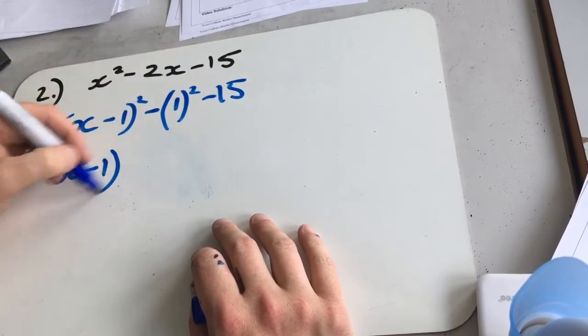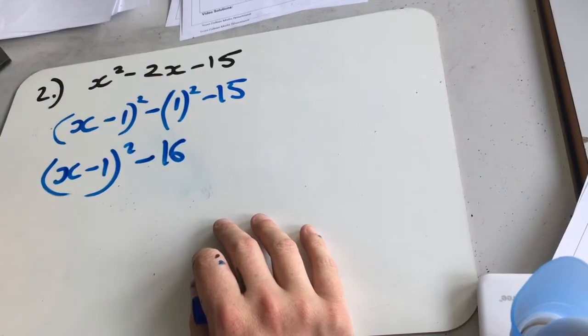So we get x minus 1 squared. Take away 16 for this one.